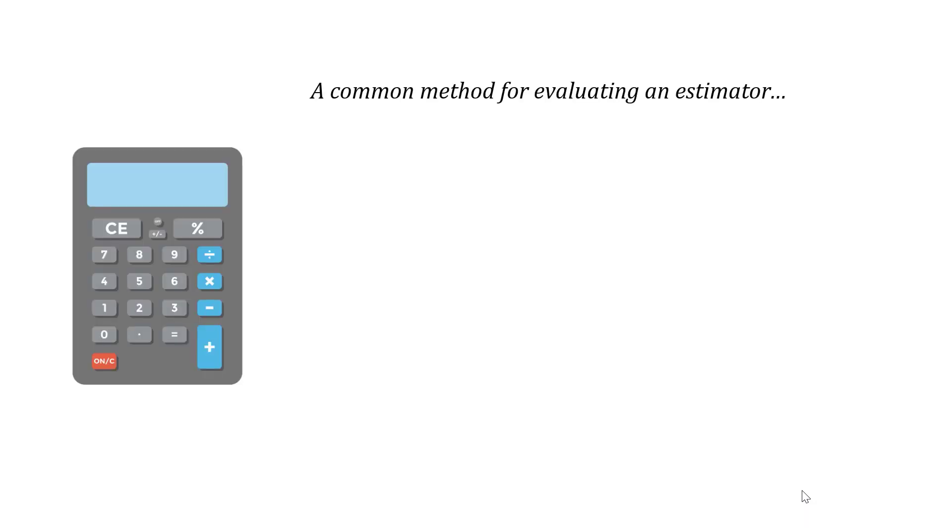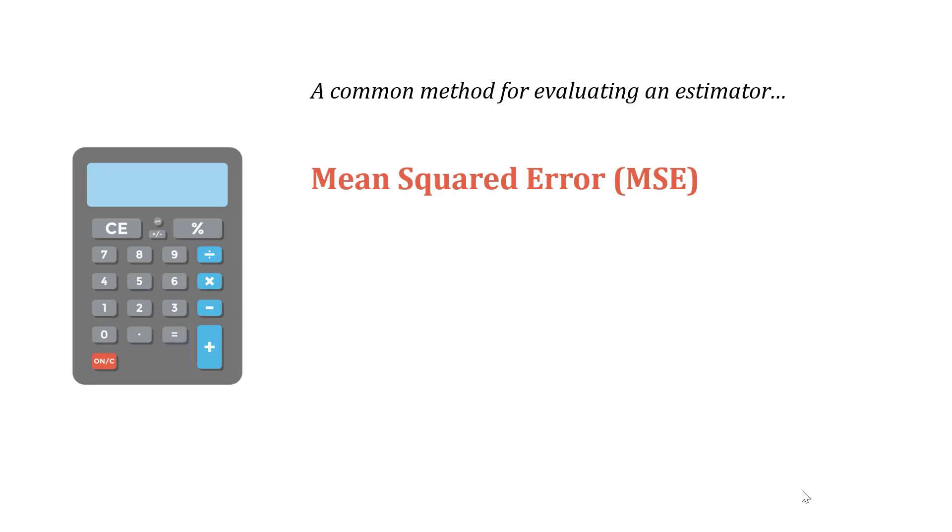A common method for evaluating an estimator is the mean squared error, or MSE. It measures the average of the squares of the errors, which is kind of a mouthful.